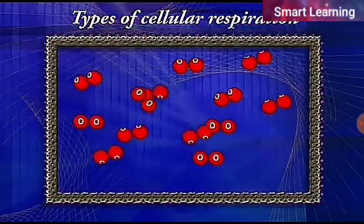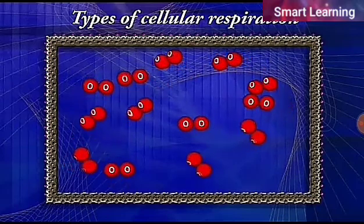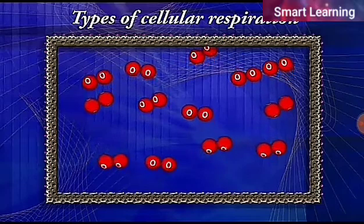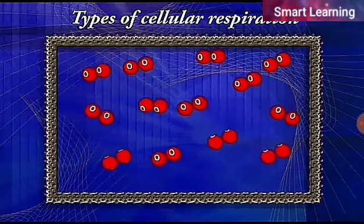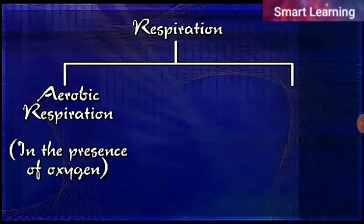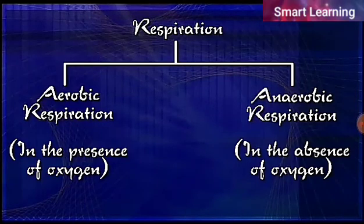Types of cellular respiration: Depending upon the availability of atmospheric oxygen, cellular respiration is divided into two categories — aerobic respiration and anaerobic respiration. Let us now understand the two categories of respiration and the pathways involved therein.